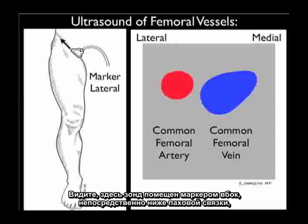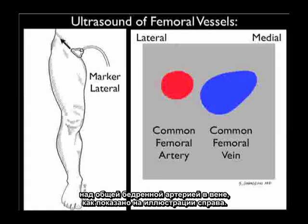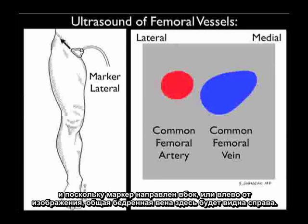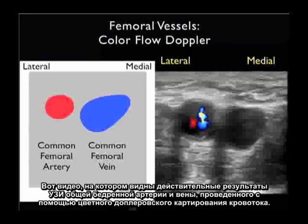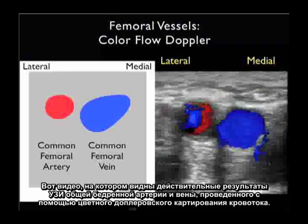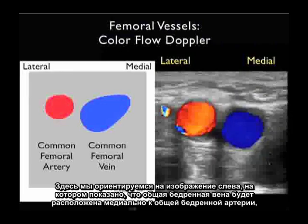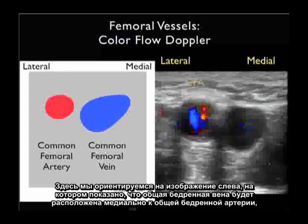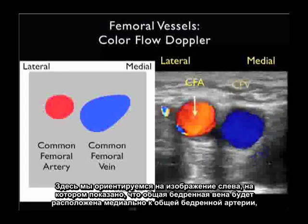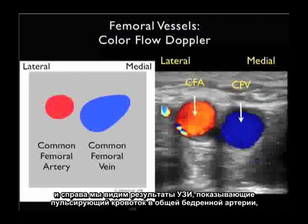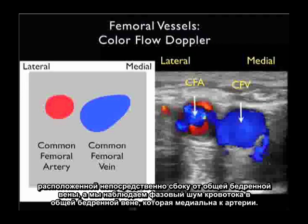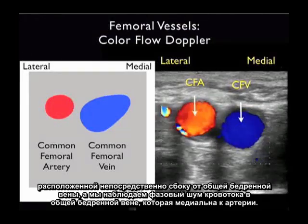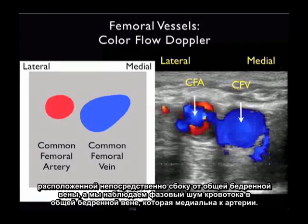Here we see the ultrasound findings with the probe placed with the marker dot laterally, just inferior to the inguinal ligament over the common femoral artery and vein. The common femoral vein will be seen medial to the common femoral artery. Because we have the marker dot oriented laterally or towards the left of the image, the common femoral vein will be seen to the right. A video with color flow Doppler demonstrates pulsatile flow within the common femoral artery located just lateral to the common femoral vein, with phasic flow seen within the vein medially.